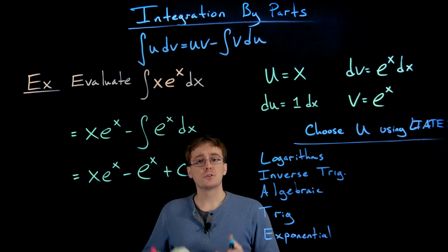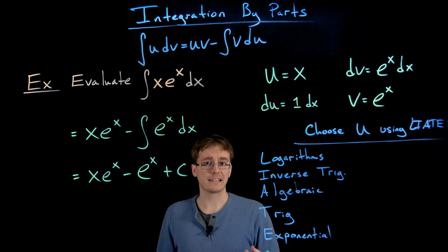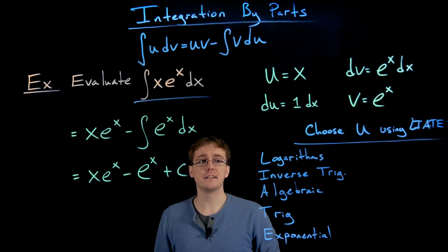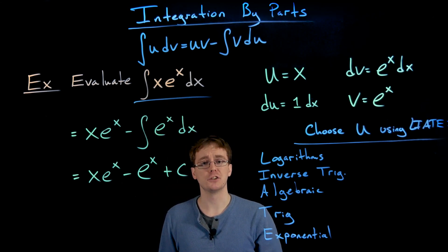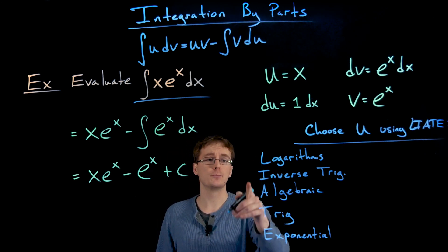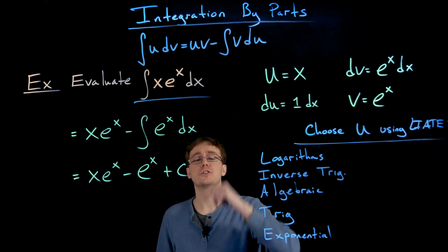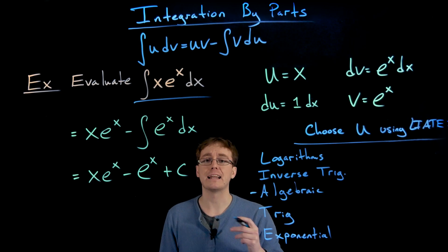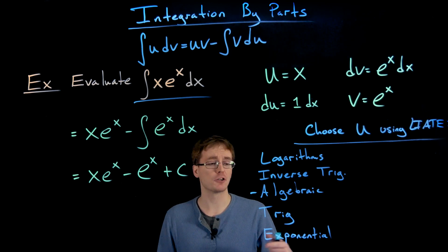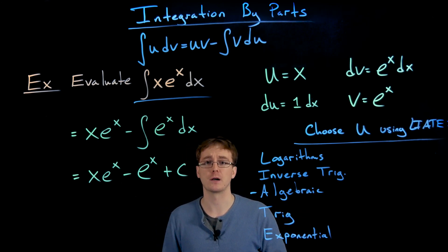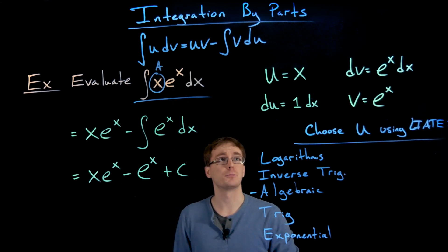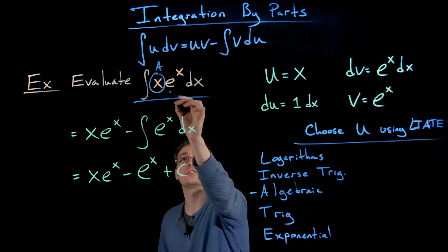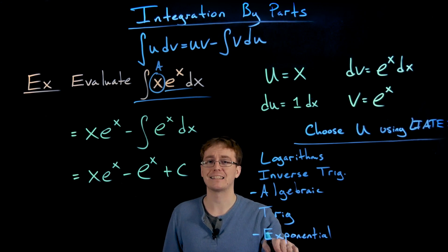If you decide to try integration by parts, the next step is identifying u and dv. You identify u by going down the LIATE list: do you have a logarithmic function? Let that be u. No logarithms here, no inverse trig — so we move to algebraic functions. An algebraic function is anything that's not the other four types, including polynomials and square root functions. Our integrand x times e to the x has a factor of x, which is our algebraic function, so u equals x. The other factor, e to the x, is exponential — at the bottom of our hierarchy.